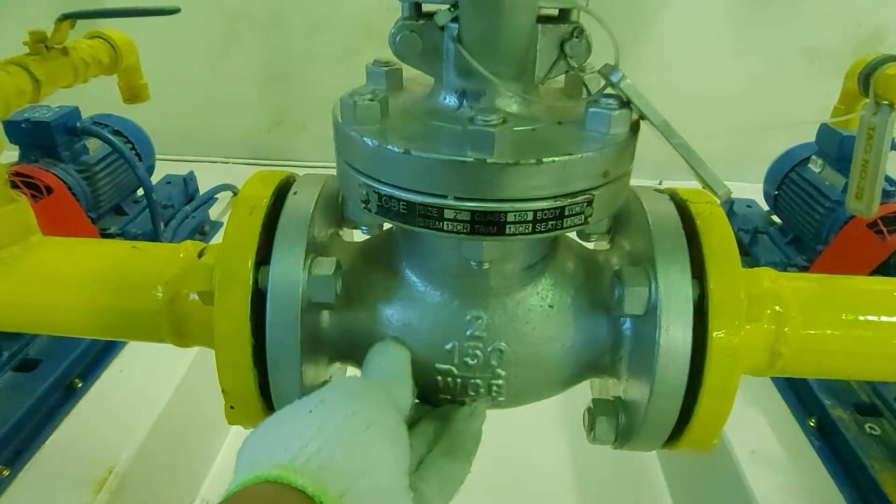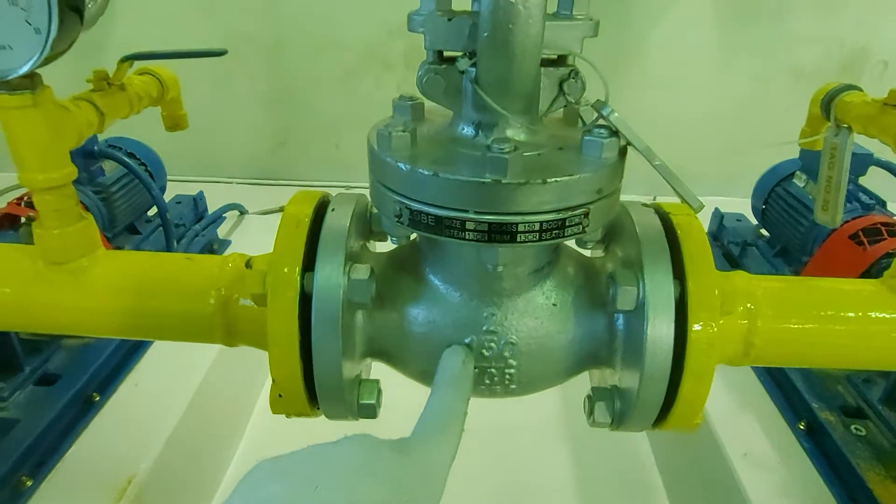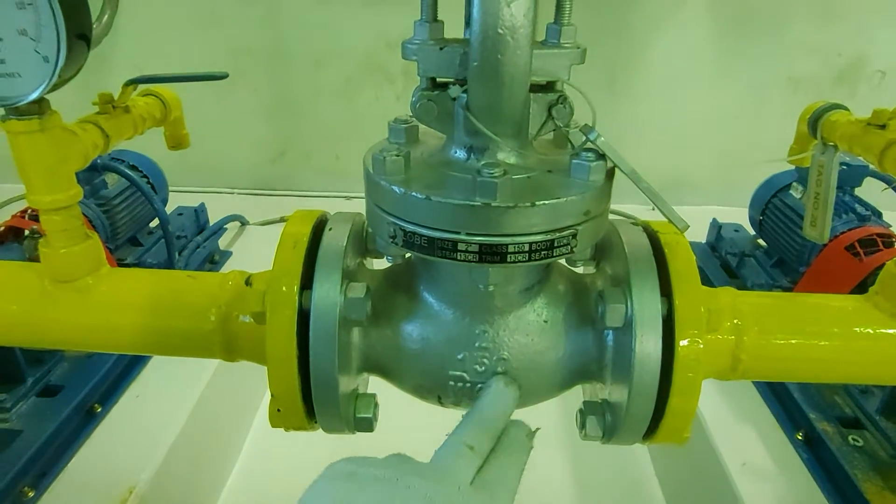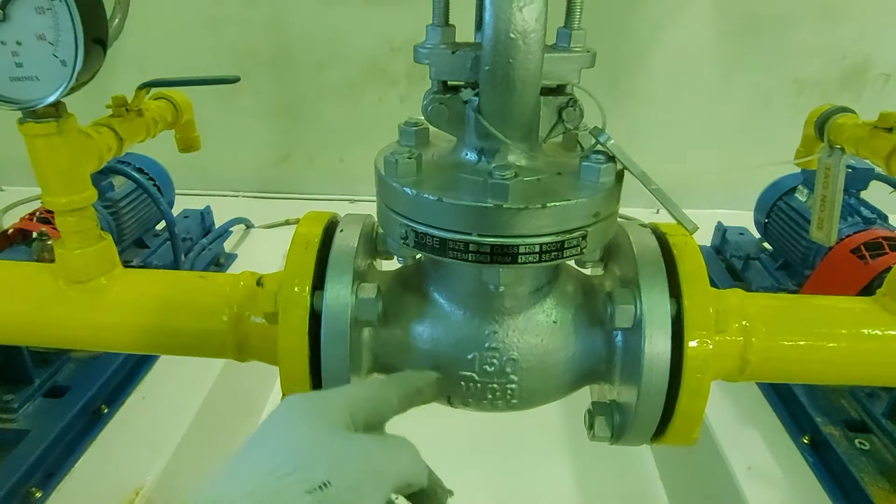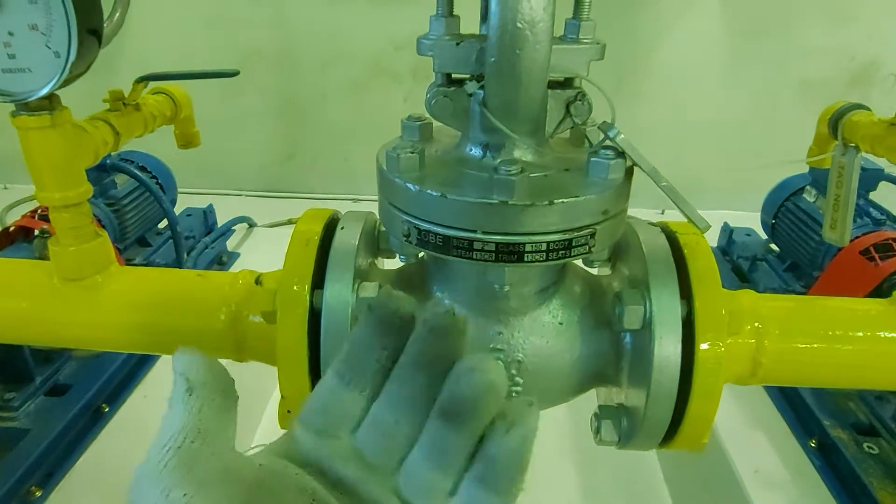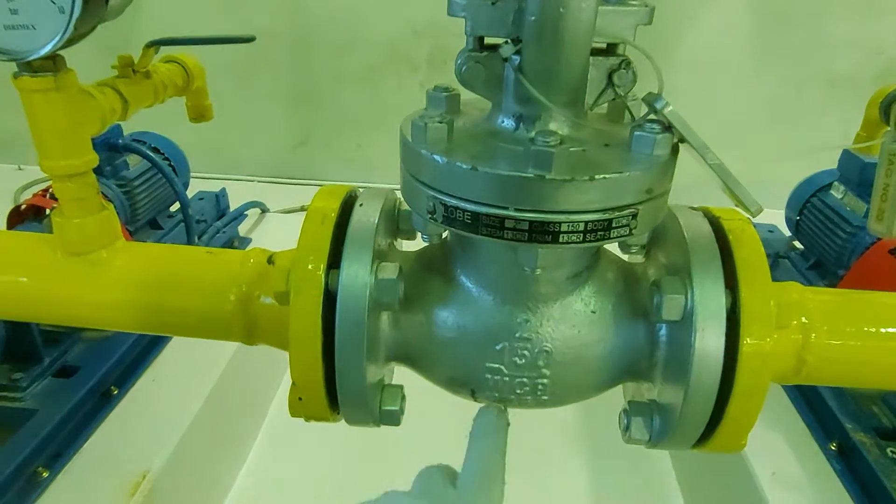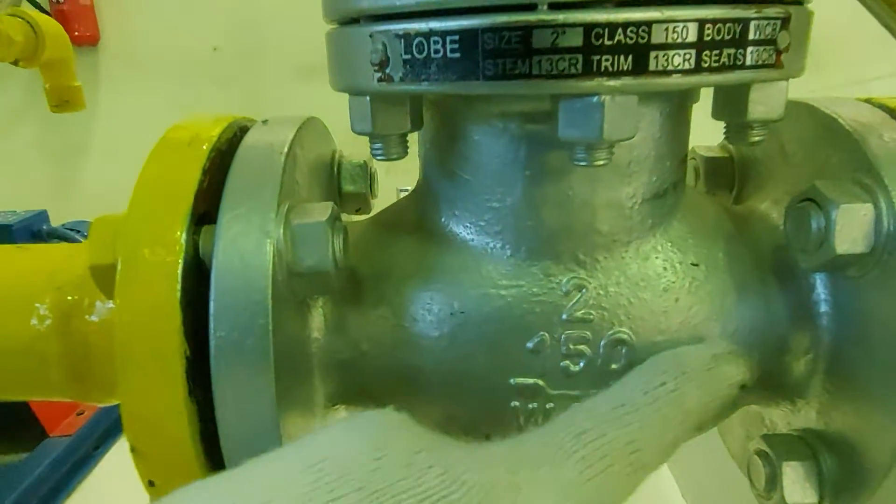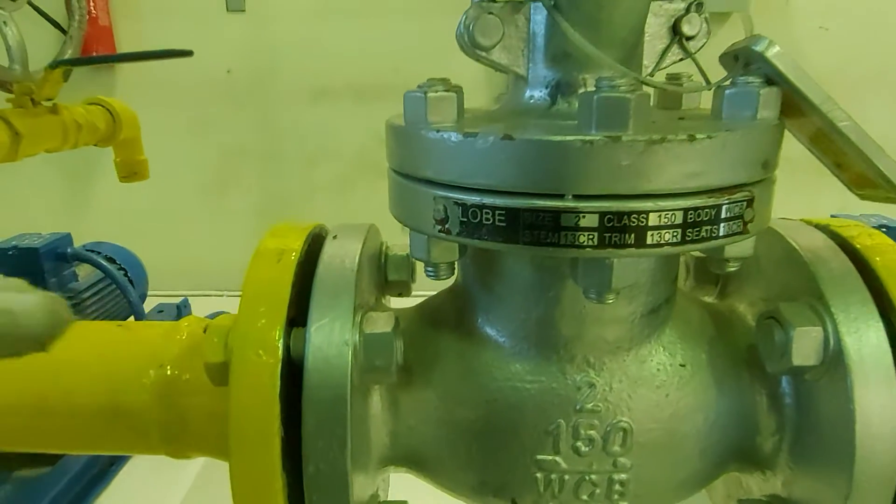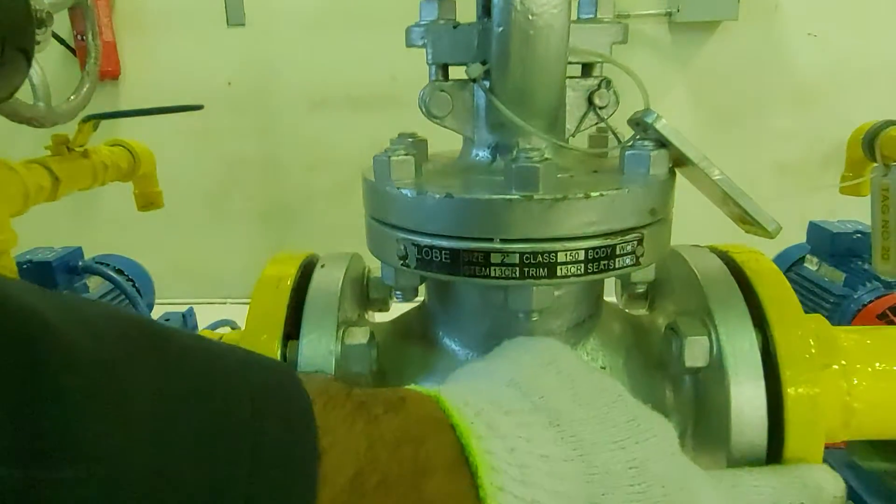And you will have another thing - gate valve and globe valve. So globe valve is single direction. You cannot use it in two ways. You cannot flip the valve and use it in opposite direction because there is an arrow. You see, it works in only this direction. So inlet should be here, outlet here, cannot be changed, cannot be flipped.